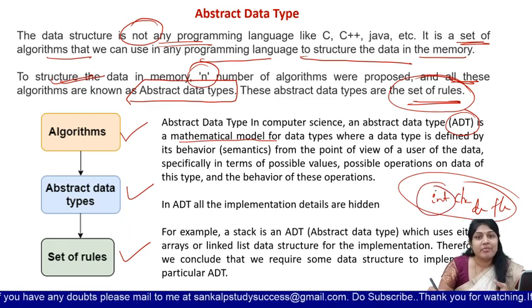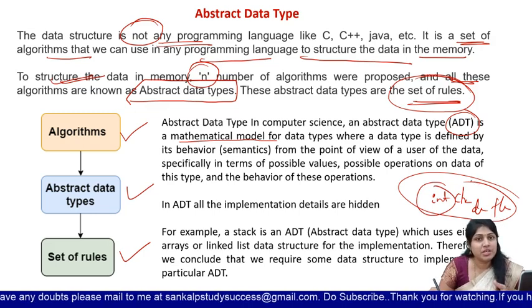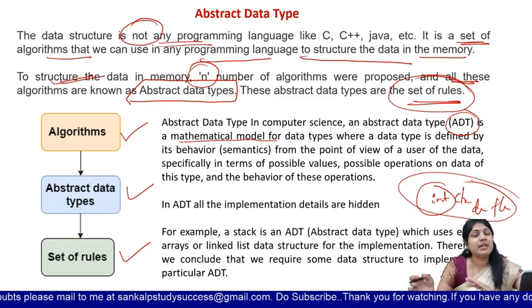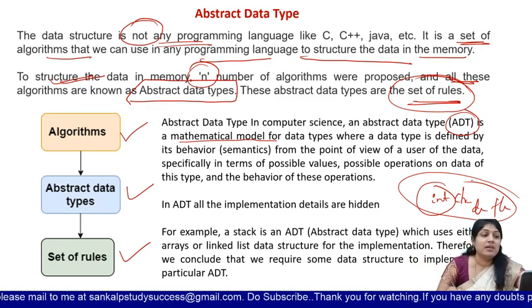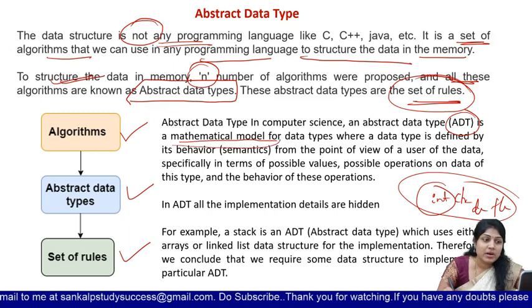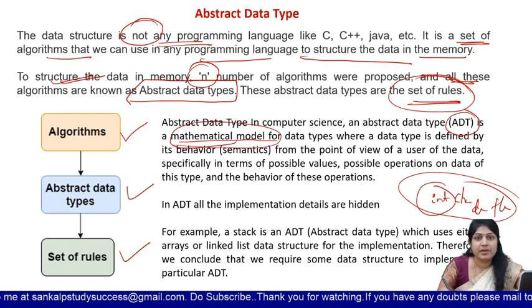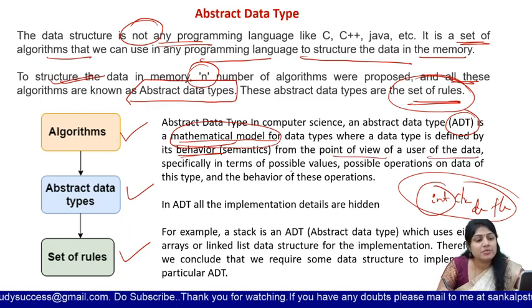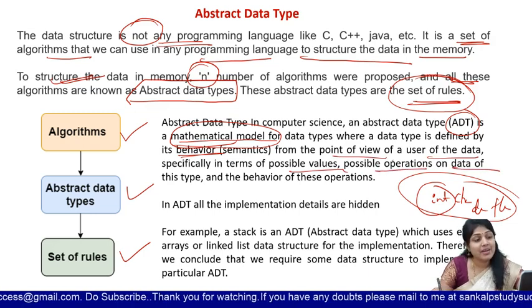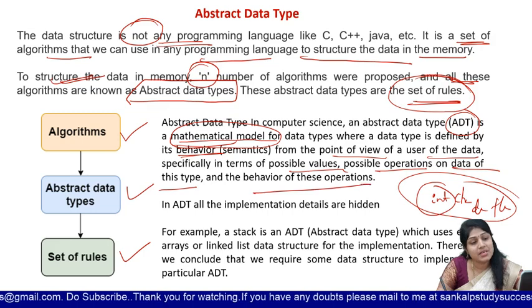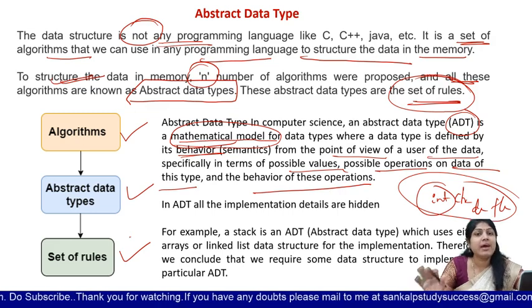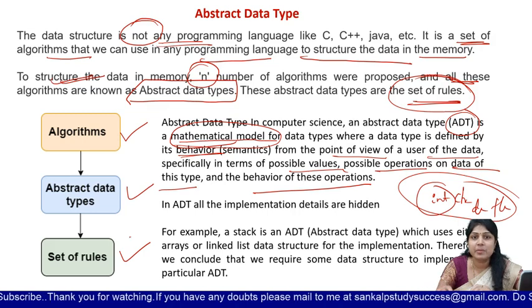You can perform addition, subtraction, multiplication — mathematical operations — on predefined data types. Similarly, we can also use a mathematical model — this abstract data type. It is a model for data types and it is defined by the behavior from the point of view of the user of the data: specifically in terms of possible values, possible operations on data of this type, and behavior of these operations. Depending on the data structure, operations will vary.